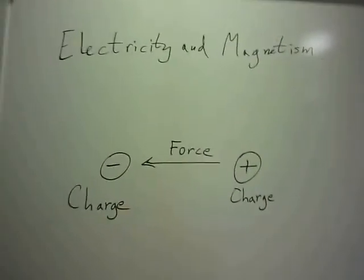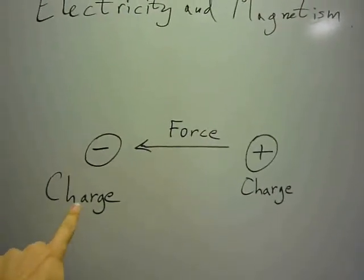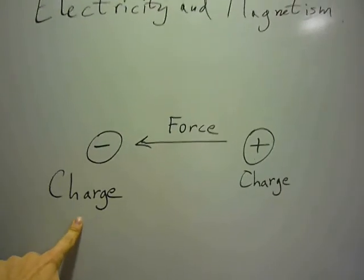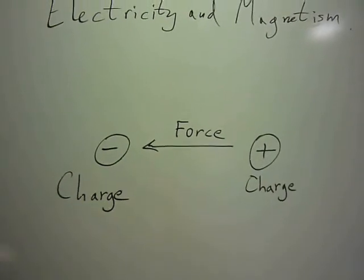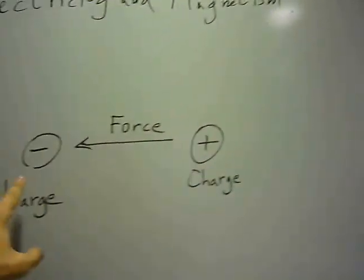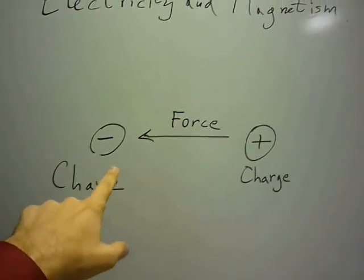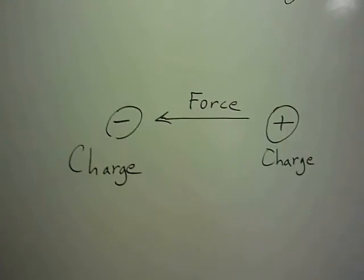Okay we're going to start with the basics. First of all you have electric charges. Charge is just a fundamental property that any object can have, like its mass or its color. You can have negative charge, positive charge, and also zero charge which is nothing at all.